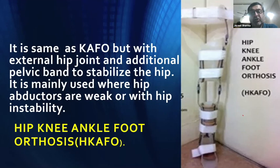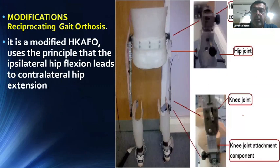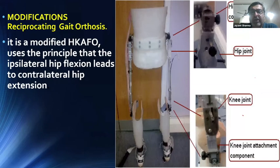The HKAFO is the same as the KAFO but with an external hip joint and an additional pelvic band. It is mainly used where the hip abductors are weak and with hip instability. A modification is the reciprocating gait orthosis (RGO), a modified HKAFO using the principle that ipsilateral hip flexion leads to contralateral hip extension, enabling reciprocal gait with one limb going into flexion as the other goes into extension.